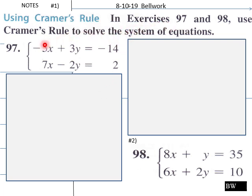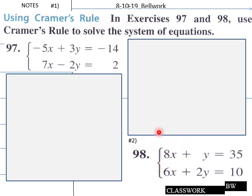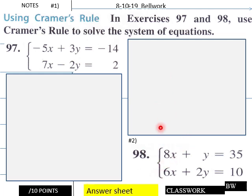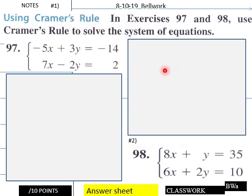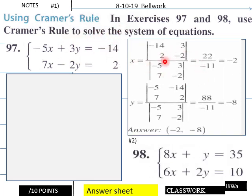Today's bellwork: teachers and students use Cramer's Rule — remember Cramer's Rule from chapter 7. Give your students about six minutes for this. See you in six. Okay, for solutions for today's bellwork, for number 97, here using Cramer's Rule we would come up with this for X.